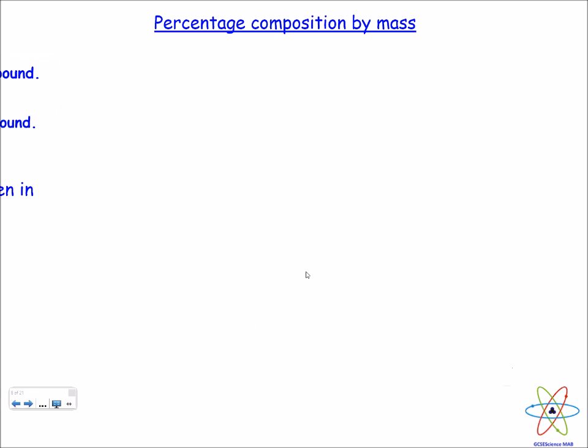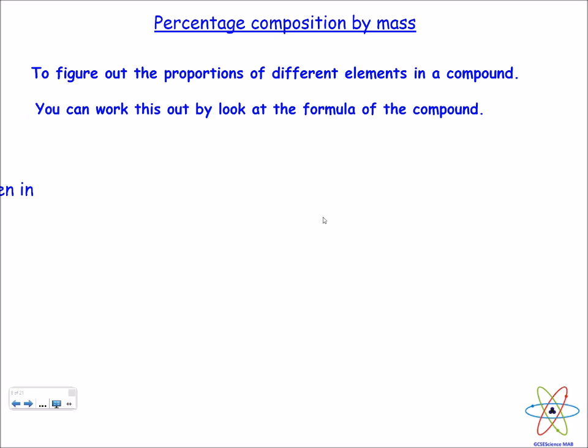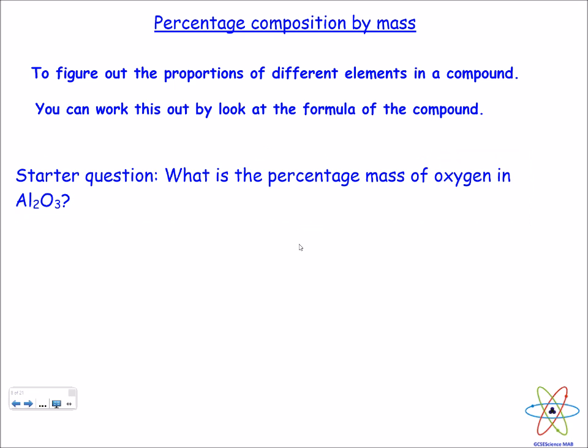Now I'm going to move on to percentage composition by mass. These calculations tell us the relative proportions of different elements in a compound, and we can work this out by looking at the formula of the compound. To explain this, I'm going to answer this question: what is the percentage mass of oxygen in Al2O3, which is aluminum oxide?